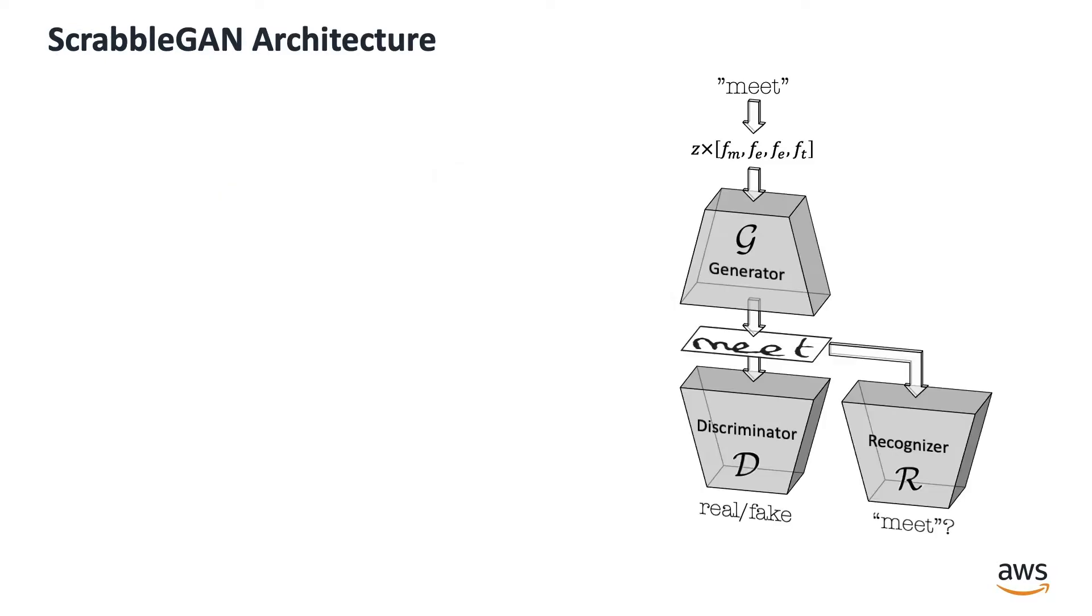The architecture includes two loss terms. The discriminator loss encourages the generated image to have a realistic looking handwriting style, while the recognizer loss encourages the result to be readable and true to the input text.